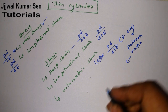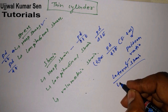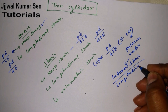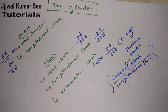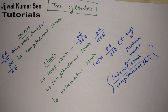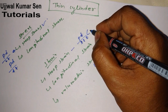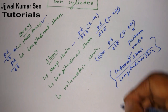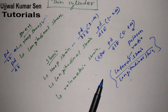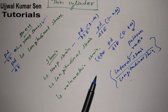Poisson's ratio is lateral strain divided by longitudinal strain. The hoop strain formula is pd/2tE multiplied by (2 - μ), and longitudinal strain is pd/4tE multiplied by (1 - 2μ). These five formulas play the most important role in the case of thin cylinders.